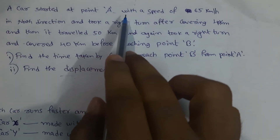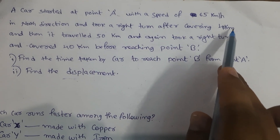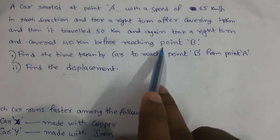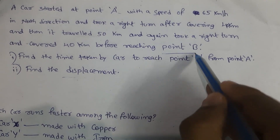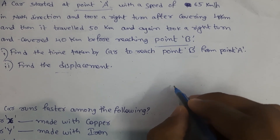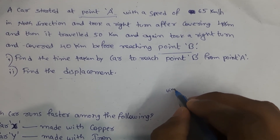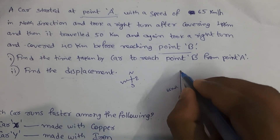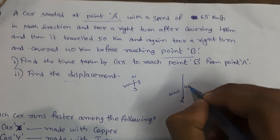A car started at point A at a speed of 65 kilometers per hour in the north direction and took a right turn after covering 40 kilometers. Then it traveled 50 kilometers and again took a right turn and covered 40 kilometers before reaching point B. We need to find the time taken by the car to reach point B from point A, and also find the displacement. The car started at point A going north, and after 40 kilometers took a right turn.